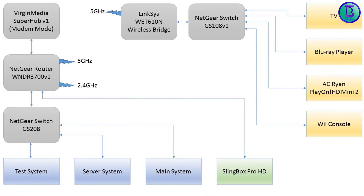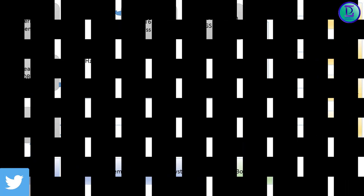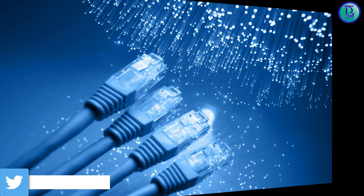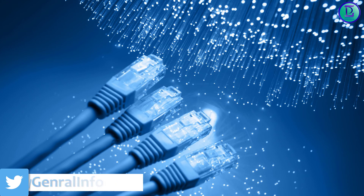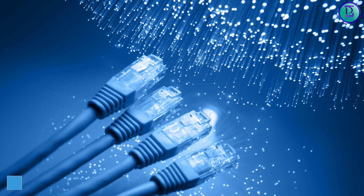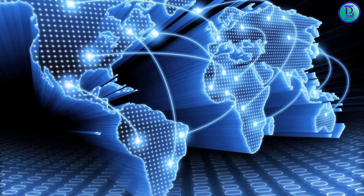Every computer or network device connected to the internet has two things true about it. A physical connection is established via a physical cable or a wireless device, and it has software necessary to interpret and receive the various internet protocols. The protocol refers to the way in which data is transferred from one device to the next. For instance, web page viewing uses a different protocol than sending email.